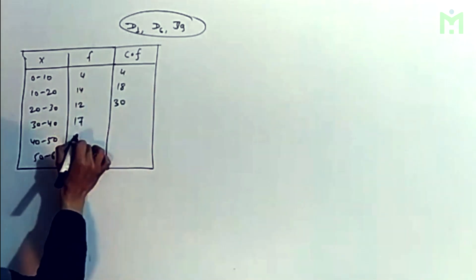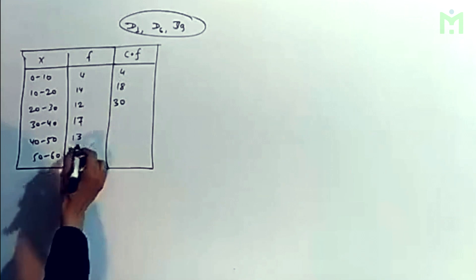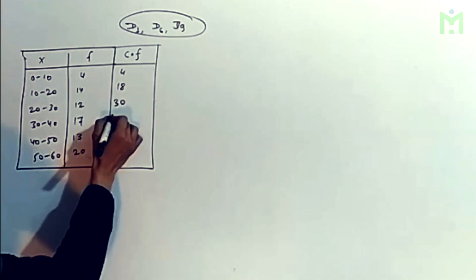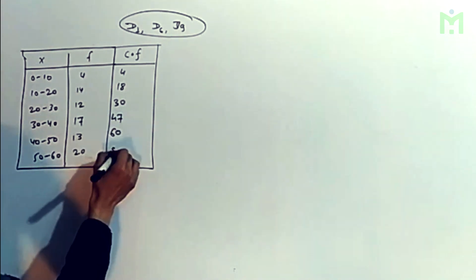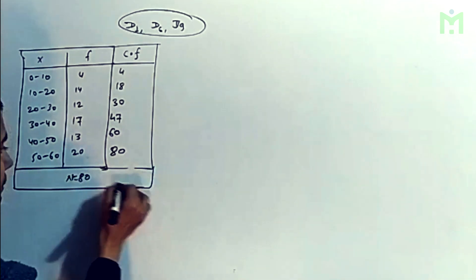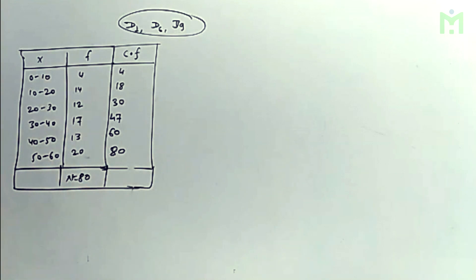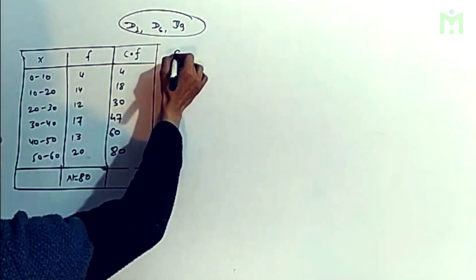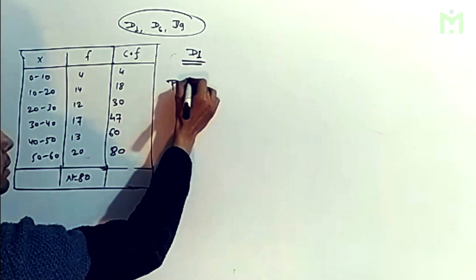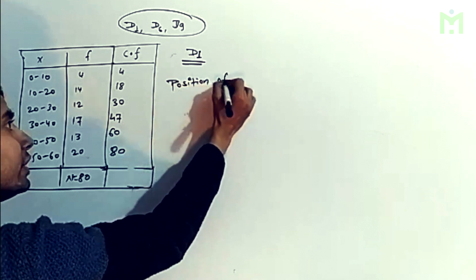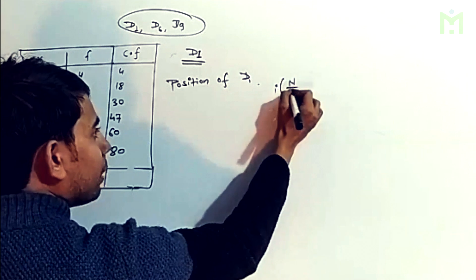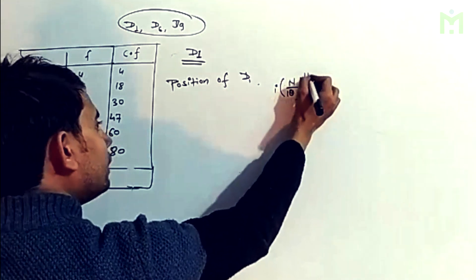And equals to D, or d1. Position of d1: i, n upon 4, i.